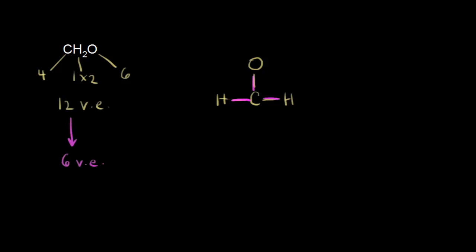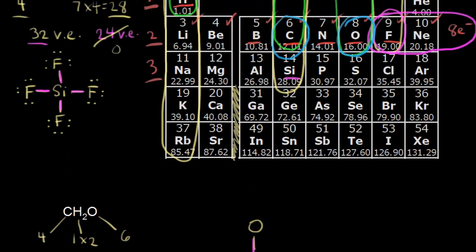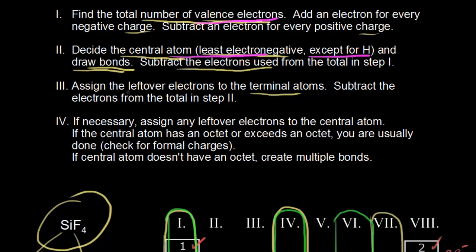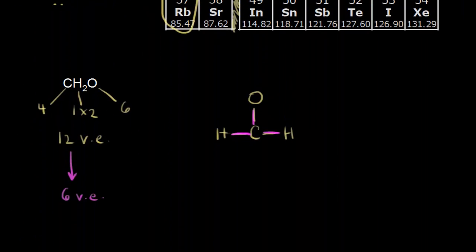Step three: assign the leftover electrons to the terminal atoms. Our terminal atoms are hydrogen and oxygen, but we're not going to assign any electrons to hydrogen because each hydrogen is already surrounded by two electrons. So we assign the leftover electrons to oxygen. Oxygen follows the octet rule — it already has two electrons around it, so it needs six more. That takes care of all 12 valence electrons.